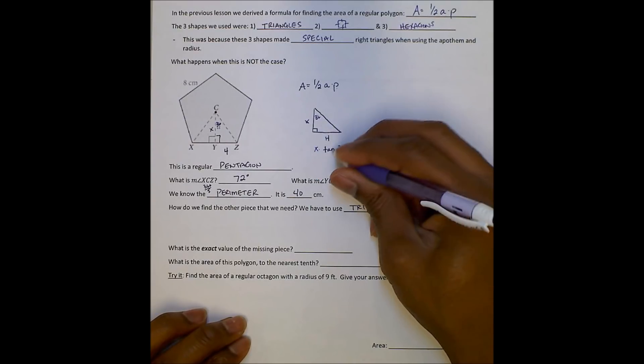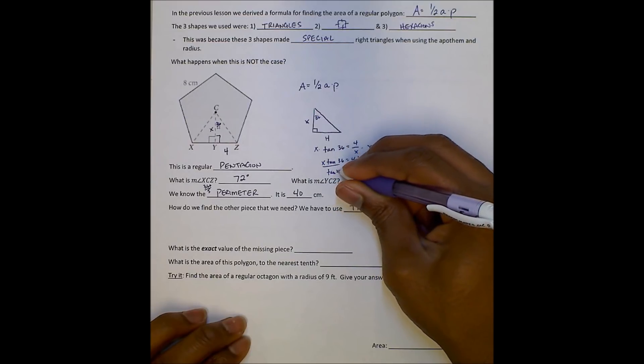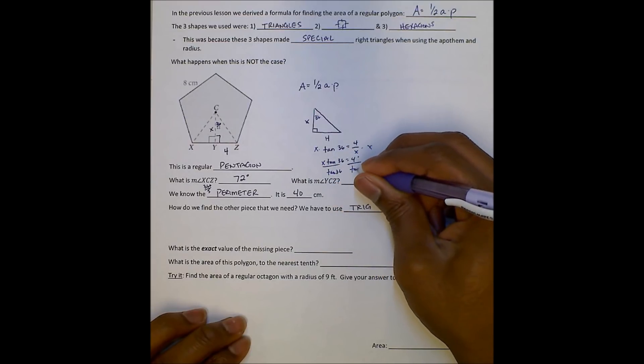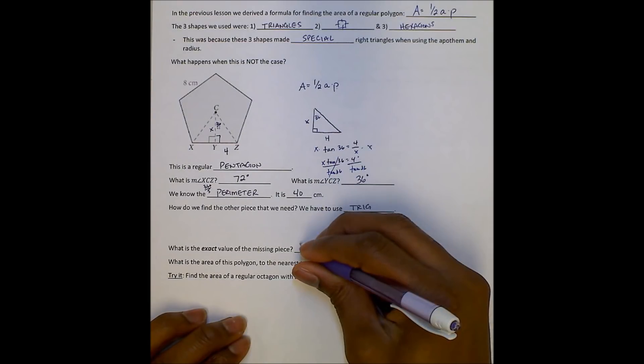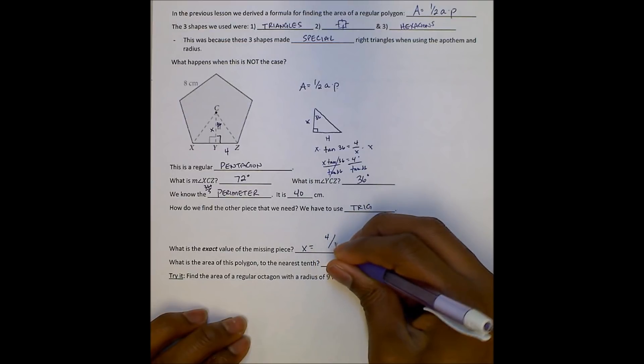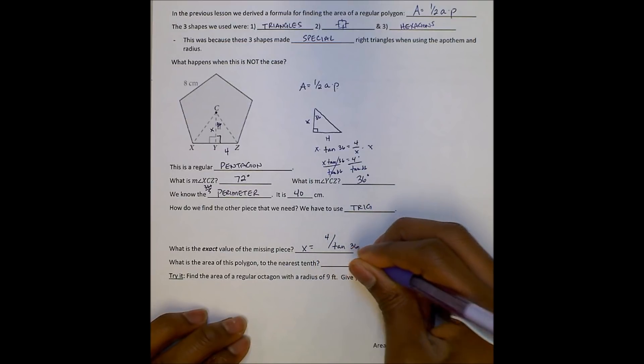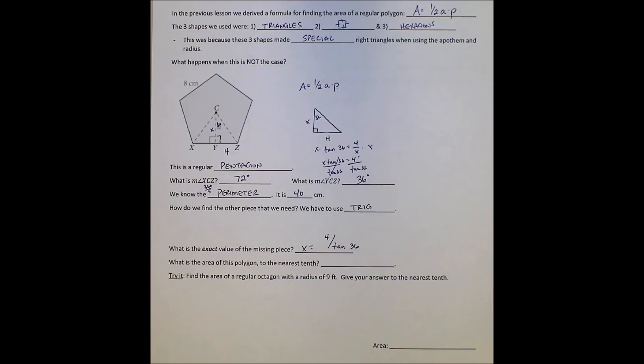And so I get X tangent 36 equals 4. I'll divide by tangent 36 on both sides. And now that gives me my exact value, X equals 4 over tangent 36. Now that's my exact value. And I know it's my exact value. I don't have to round anything. That's it.